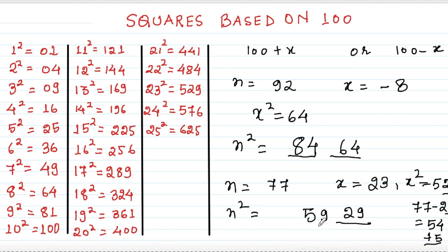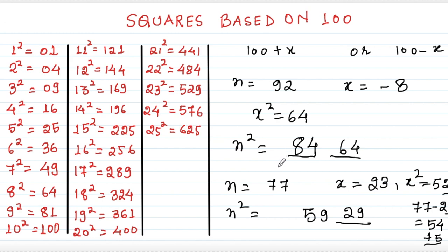So this is how we find squares of different numbers based on 100: first find x, then compute x², take the last two digits of x², then do n plus x or n minus x depending on whether the number is more or less than 100, and add any leftover digits as carry over. If you practice with about 7 to 10 questions you will be thorough in this method.